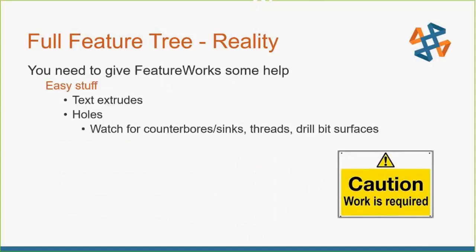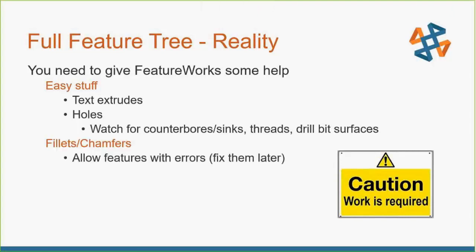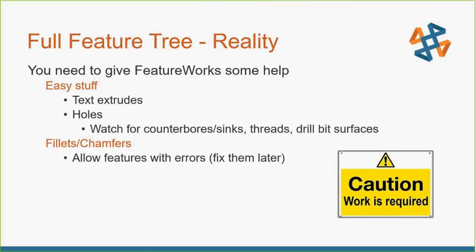We're going to show another example and start with some easy stuff. We'll look for things like text extrudes and holes — for holes we're looking for counterbores, countersinks, threads, drill bit surfaces, that kind of thing. Next we'll let FeatureWorks take a crack at finding all the fillets and chamfers in the model. We're going to allow those features to be built with errors, because if we can get something to show up on screen we might be able to fix it pretty easily after the FeatureWorks process is finished.